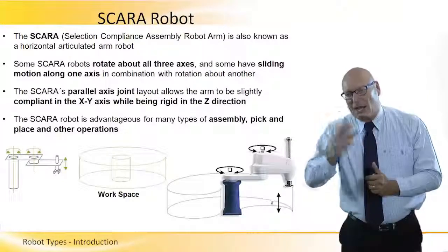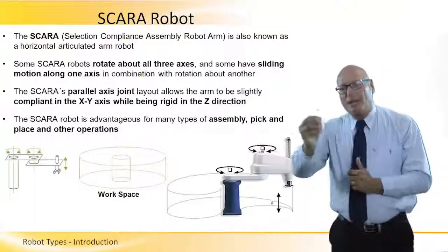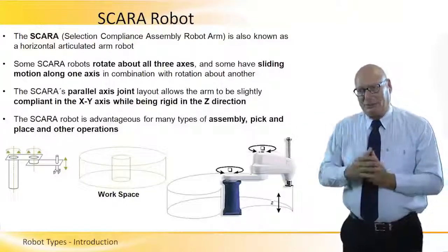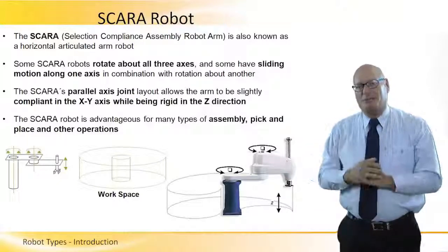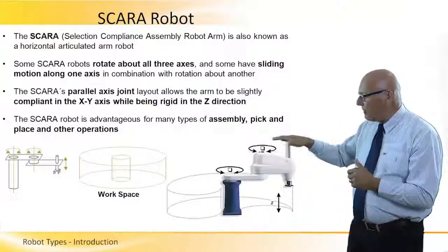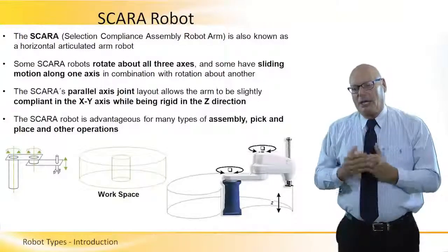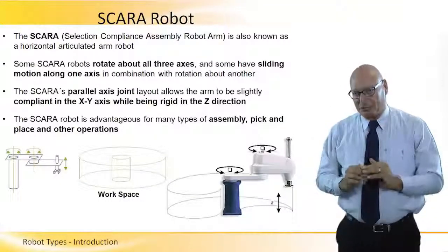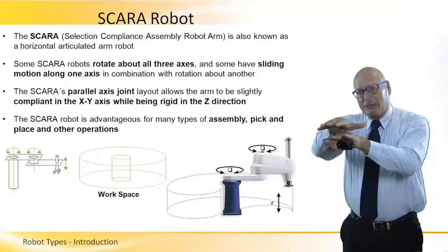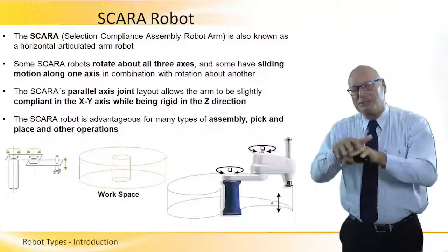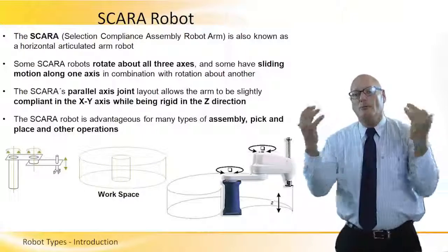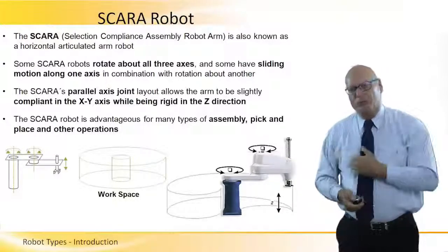The SCARA by the way stands for Selective Compliance Assembly Robot Arm. And it rotates about all three axes with sliding motion along one axis and it has parallel axes joints. In this particular case, we have two parallel axis joints and the Z direction automatically goes up and down. So it's not two and a half degrees. It's perfectly three axes. And it all works in conjunction with each other to cover most of the cylindrical workspace as opposed to the cylindrical one.